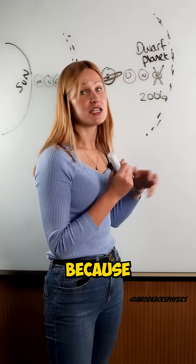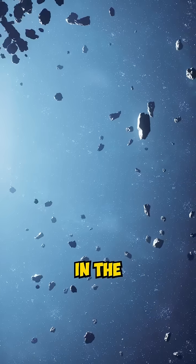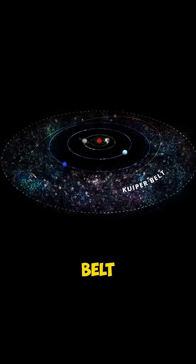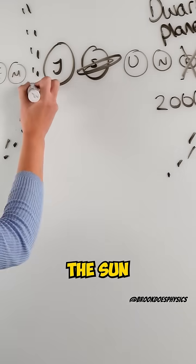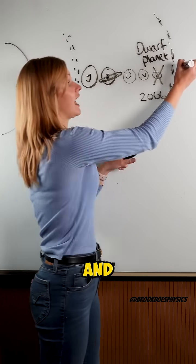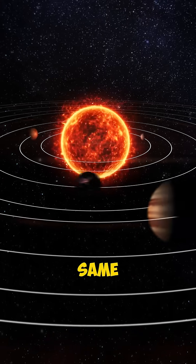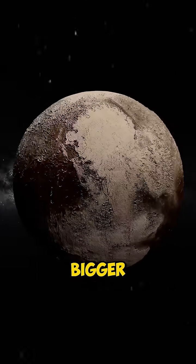The reason is we started observing more in the asteroid belt and the Kuiper belt, and what they found was there's actually objects orbiting the sun in the asteroid belt and the Kuiper belt that are either the same size as Pluto or bigger than Pluto.